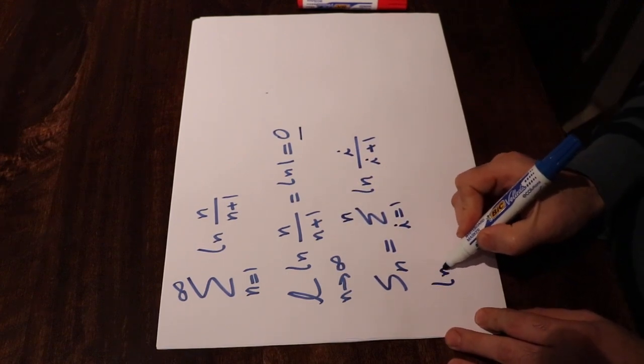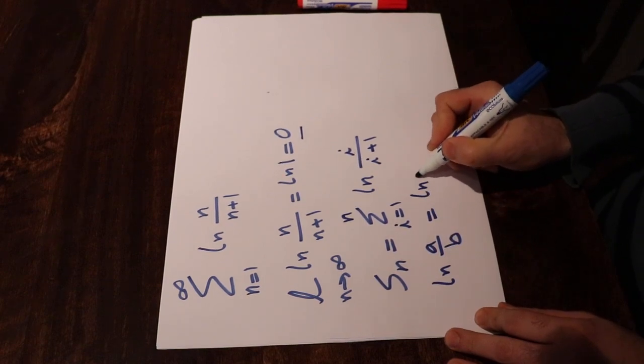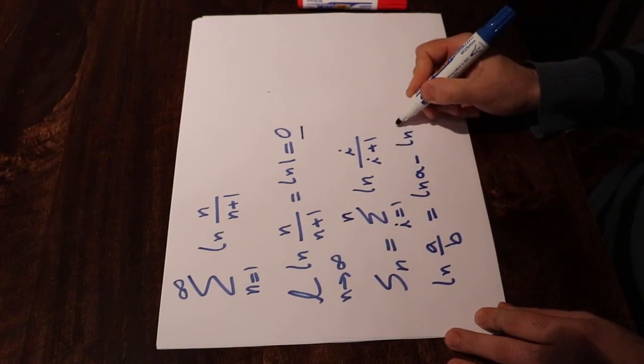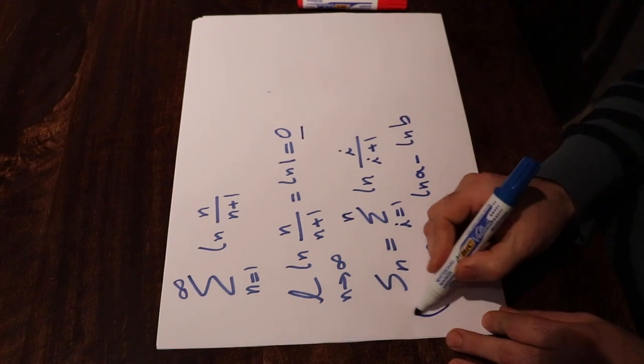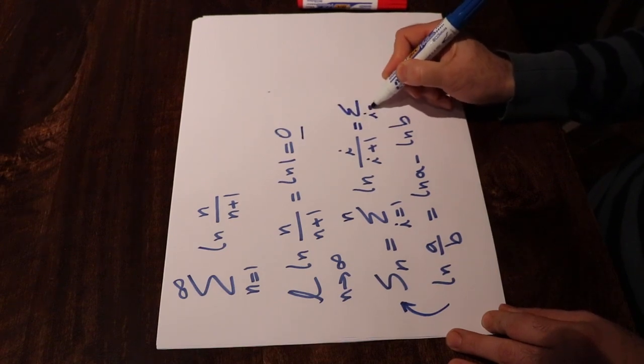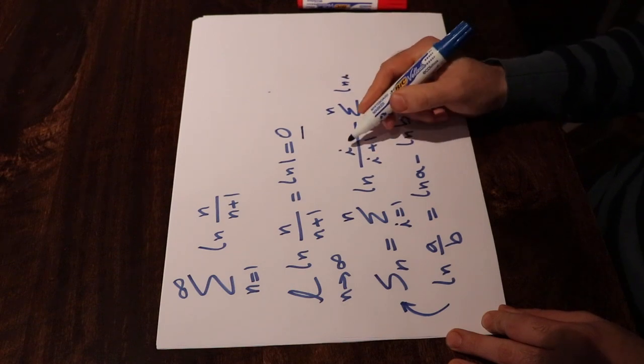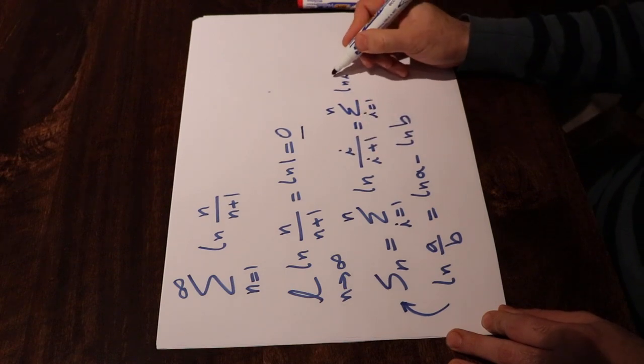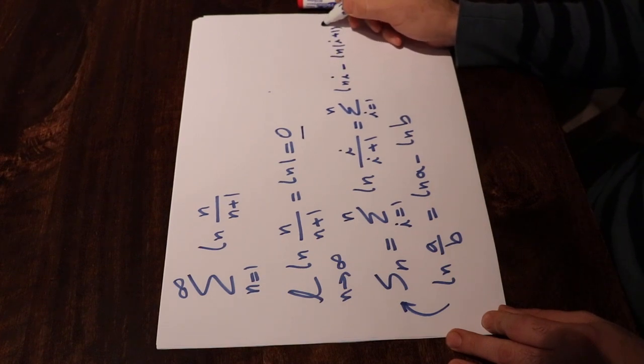From algebra, we know that ln a divided by b will be equal to ln a minus ln b. So if you apply this rule into this one, that will be equal to sigma i from 1 to n times ln i divided by i plus 1 will be equal to ln i minus ln i plus 1.